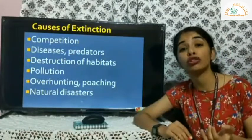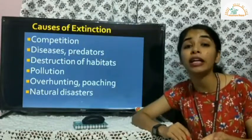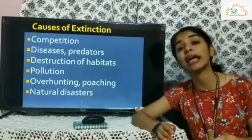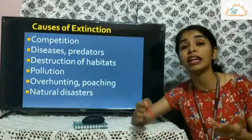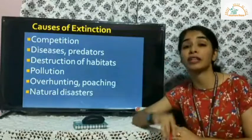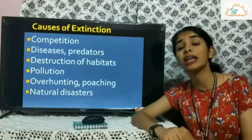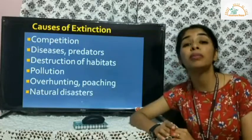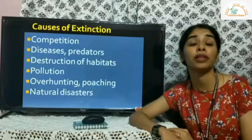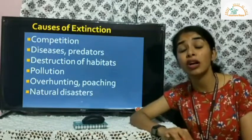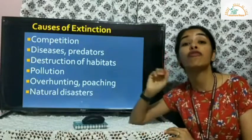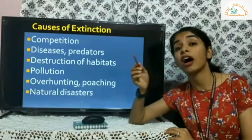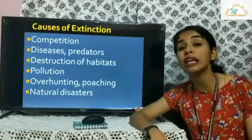Pollution is also a major cause. When air, water bodies, soil, or land get contaminated, certain organisms cannot survive and die. This can lead to acid rain and climatic changes. A good example is lichens — you'll find them only in areas with minimal or no pollution. In polluted bustling cities, you won't find lichens, so their presence indicates very low pollution.